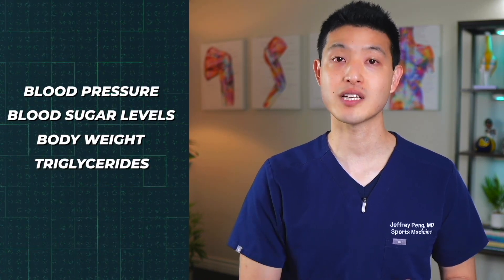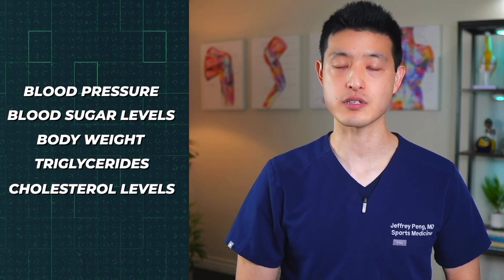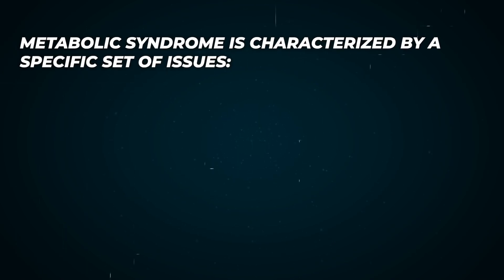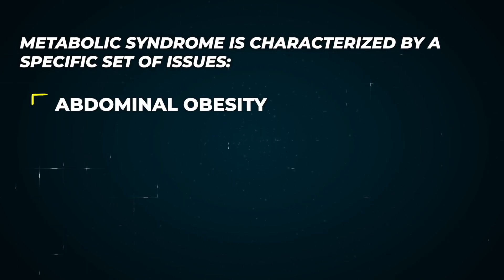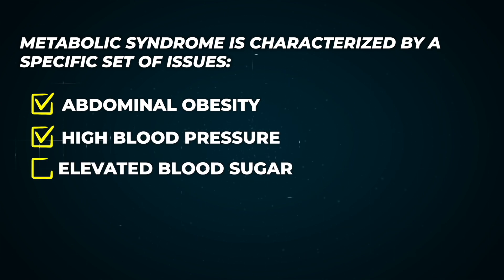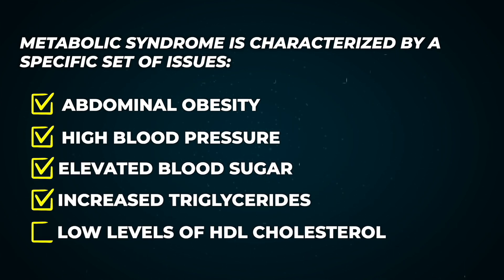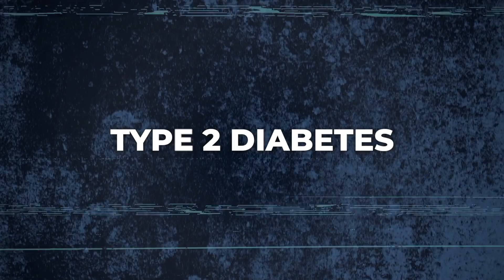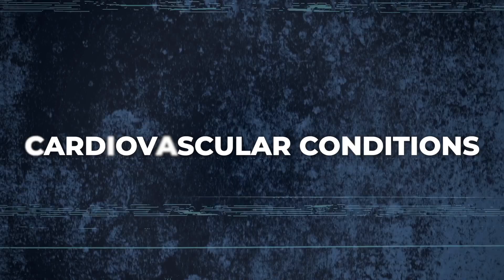Let's start by defining metabolic health. This involves crucial factors like blood pressure, blood sugar levels, body weight, triglycerides, and cholesterol levels. When these factors combine unfavorably, they form what is known as metabolic syndrome, which is characterized by abdominal obesity, high blood pressure, elevated blood sugar, increased triglycerides, and low levels of HDL cholesterol.